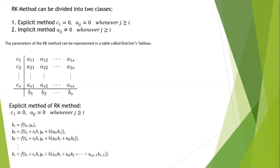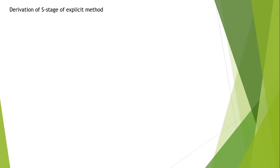We are going to start from stage 2 because stage 1 gives us just the Euler scheme. That is, when we only have one k, we get y_(n+1) equals y_n plus h·f_n, which is our normal explicit Euler method. So we will start the derivation from when s equals 2, that is stage 2.